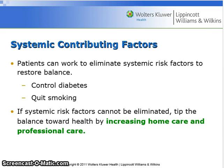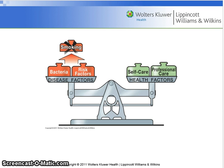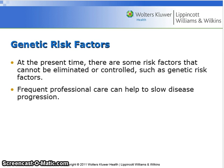Patients can work to eliminate systemic risk factors to restore balance, such as controlling diabetes and smoking cessation. If systemic risk factors cannot be eliminated, tip the balance toward health by increasing home care and professional care. See figure 12.6, page 214. At the present time, there are some risk factors that cannot be eliminated or controlled, such as genetic risk factors. Frequent professional care can help to slow disease progression.